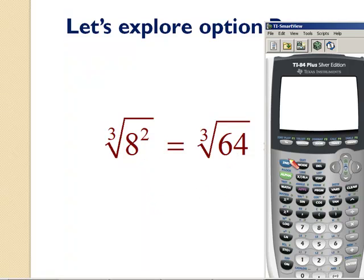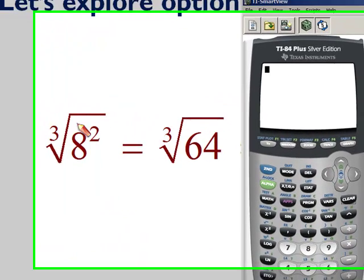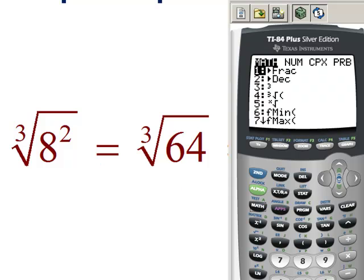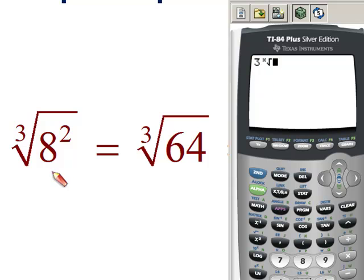So the third root of, let's hit the math key, number five. Now it's 8 squared. So I'm going to put this in parentheses. Eight raised to the second power. All right, so this looks like what I have here. The third root of 8 squared. I press enter, and we get 4.